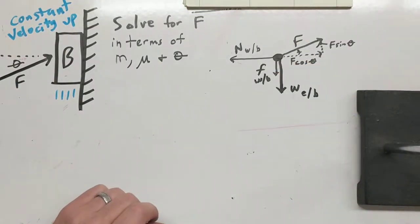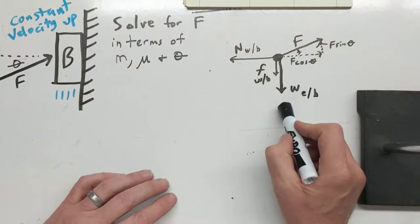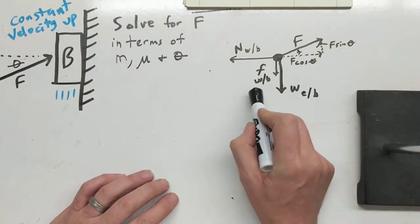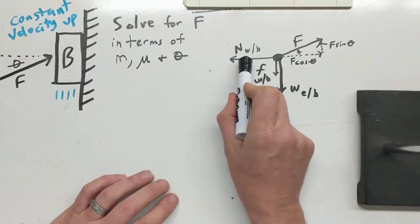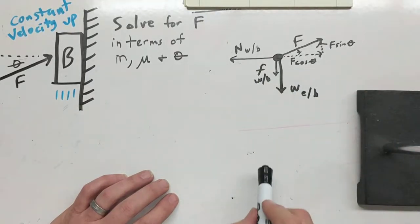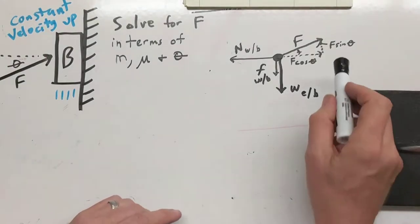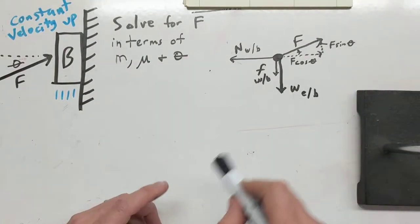So if I draw my force diagram here, I see I've got the weight of Earth on the box down, I've got friction from the wall on the box, I've got a normal force from the wall on the box, and I've got this applied force, which I can break down into F sine theta and F cosine theta.